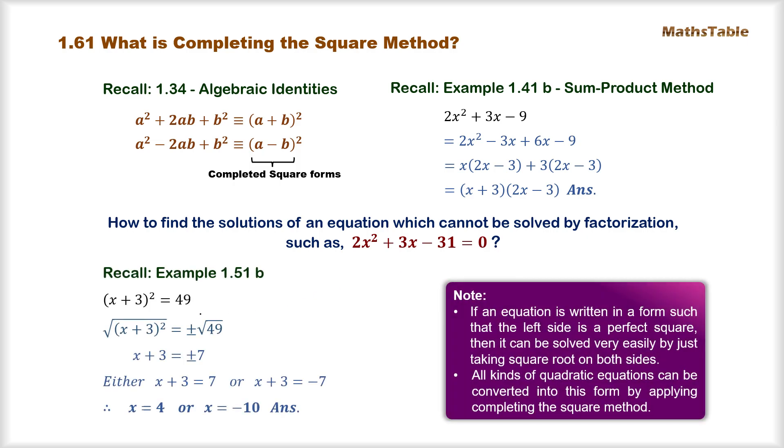Now what we discussed in example 1.51 part b was that we were given an equation of such a kind in which the left side was written in a form similar to the completed square form of the identities. Now in that example what we did was that we used to take square root on both sides and we used to get two simple equations.